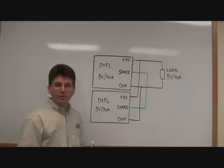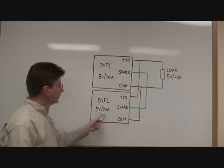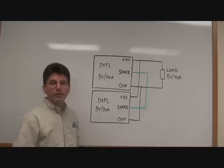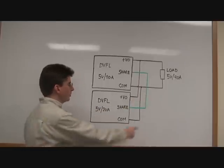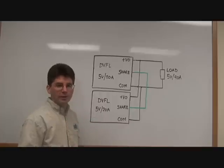They will also function as one converter. So in this example, each converter is 5 volts at 20 amps. The load requires 5 volts at 40 amps. So this combination of two converters will function as one DC-DC converter.